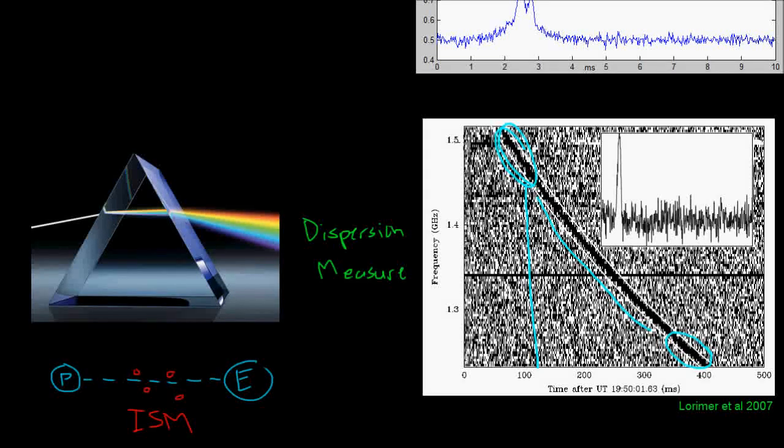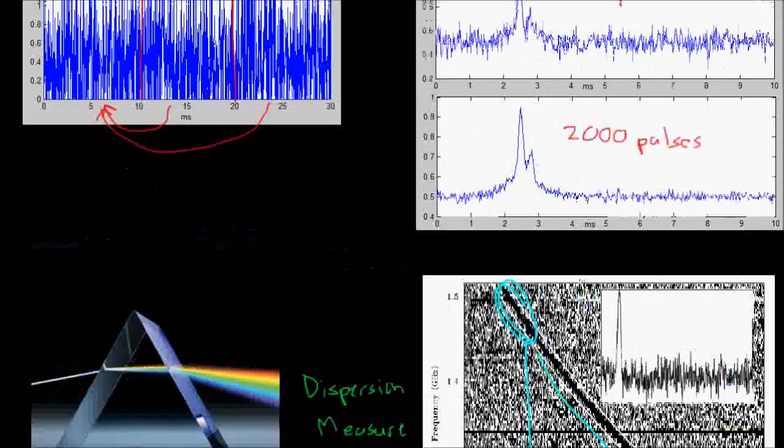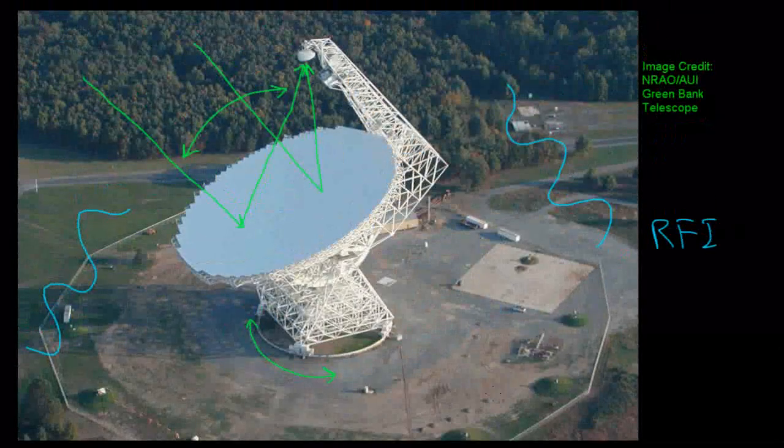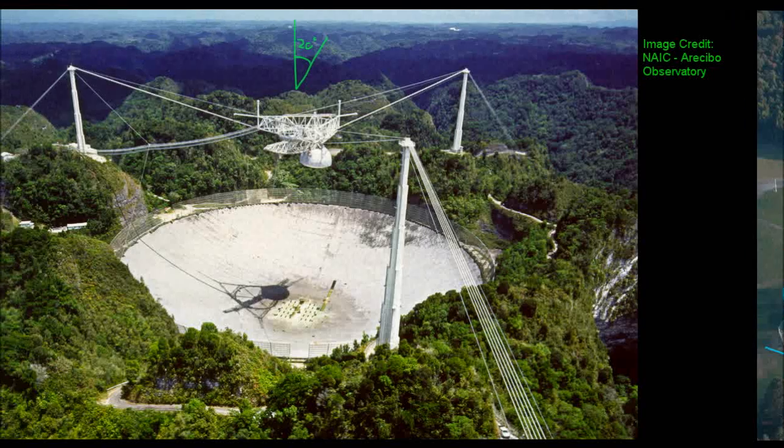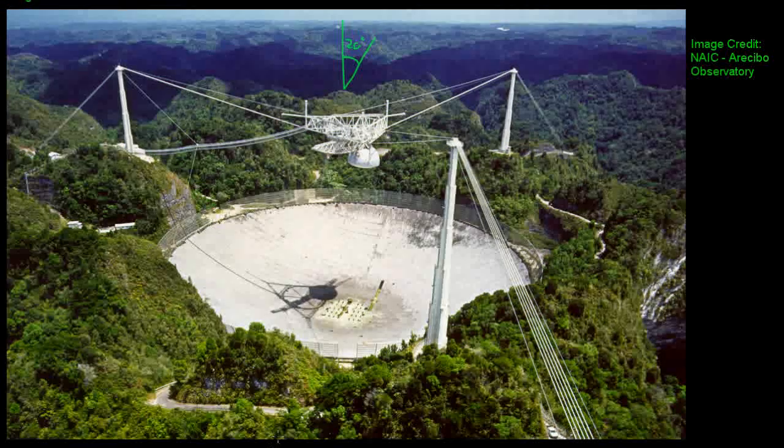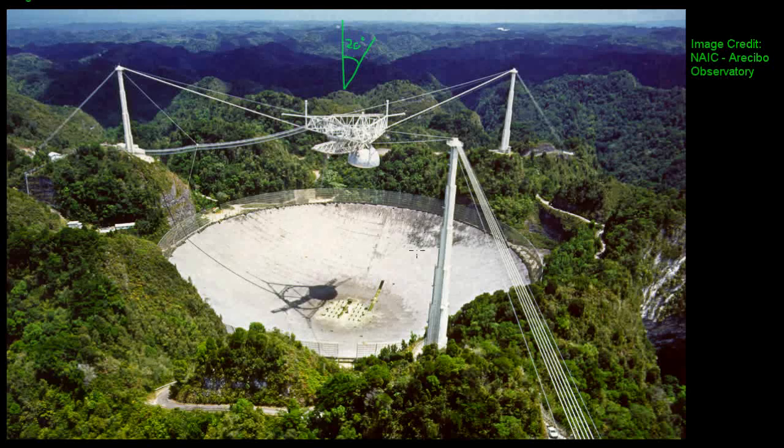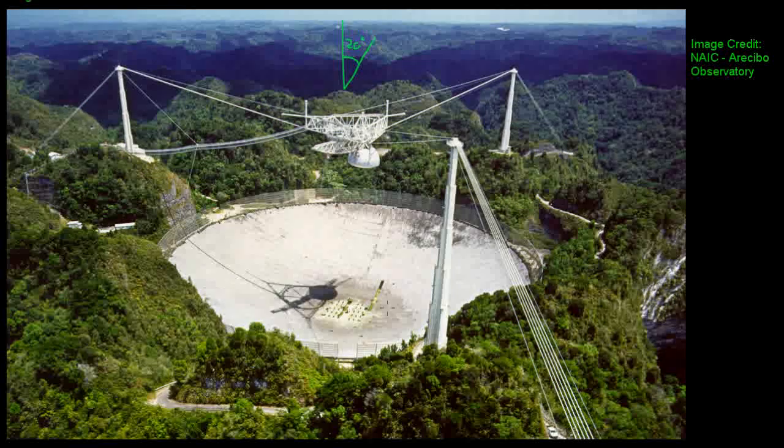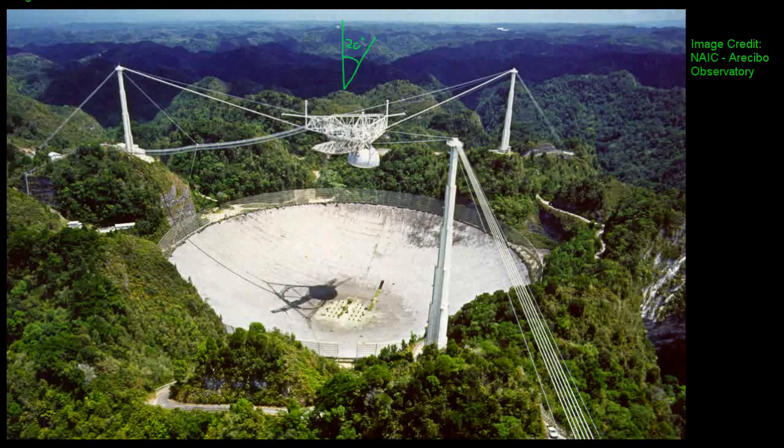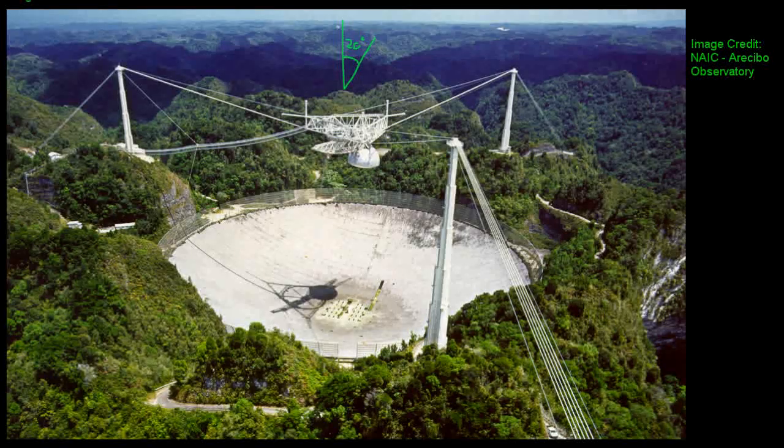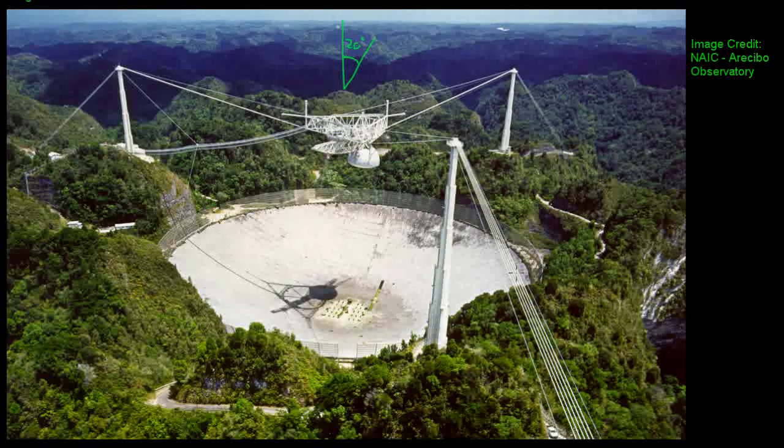It's very fortunate that NANOGrav has access to two of the best radio telescopes in the world, Arecibo and the Green Bank Telescope, which are again fantastic tools to work with. But we are also always finding ways to improve both the telescopes themselves and how we use these telescopes for pulsar timing. And we will talk more about these active NANOGrav projects and the people who are working on them in the next video.